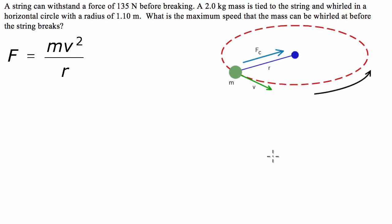To start with when you're doing any kind of physics question, we draw quite a simple picture, as you can see here, and we enter in the information that we know. So we know that this is a 2 kilogram mass. We know that the radius is 1.1 and we know the maximum force that we can have is going to be equal to 135 newtons.